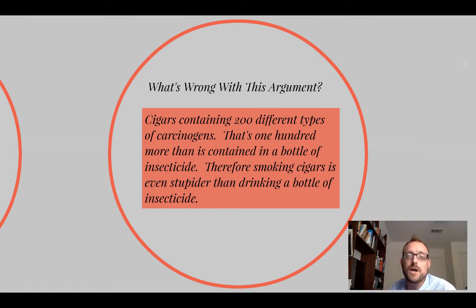Cigars contain 200 different types of carcinogens. That's 100 more than is contained in a bottle of insecticide. Therefore, smoking cigars is even stupider than drinking a bottle of insecticide. You can see we've got some spellcheck errors there. But hold on, wait. Let's think about this. What's the argument again? They're saying that cigars have 200 different types of carcinogens. And they're saying that's more types of carcinogens than there are in a bottle of insecticide. So therefore, smoking cigars is worse than drinking a bottle of insecticide.